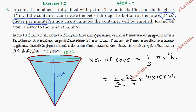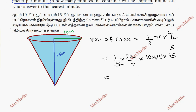So we are going to cancel 5 times and balance: 22 into 10 into 10 into 5 divided by 7. The total volume is 1571.4286 meter cube, rounded up.